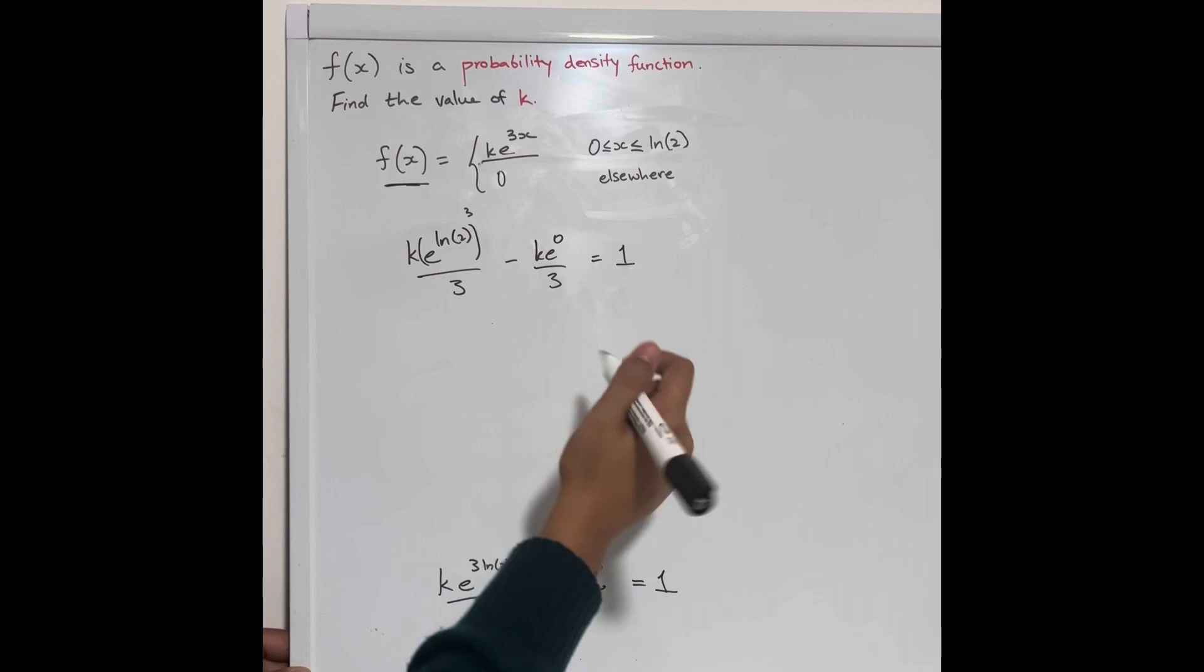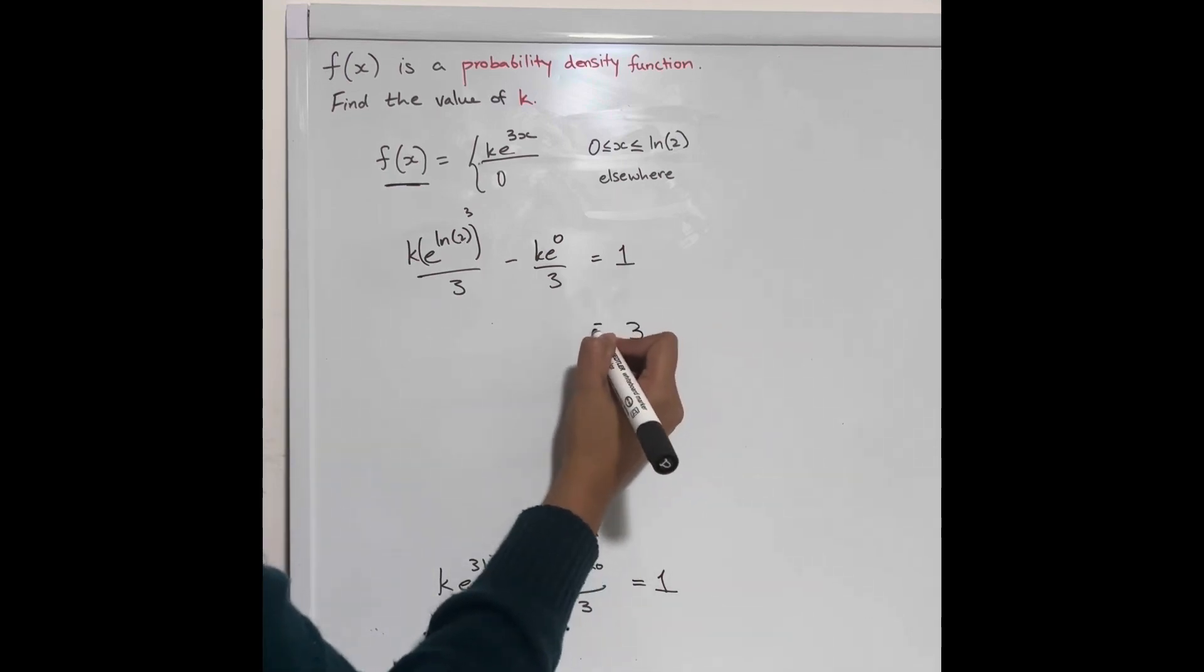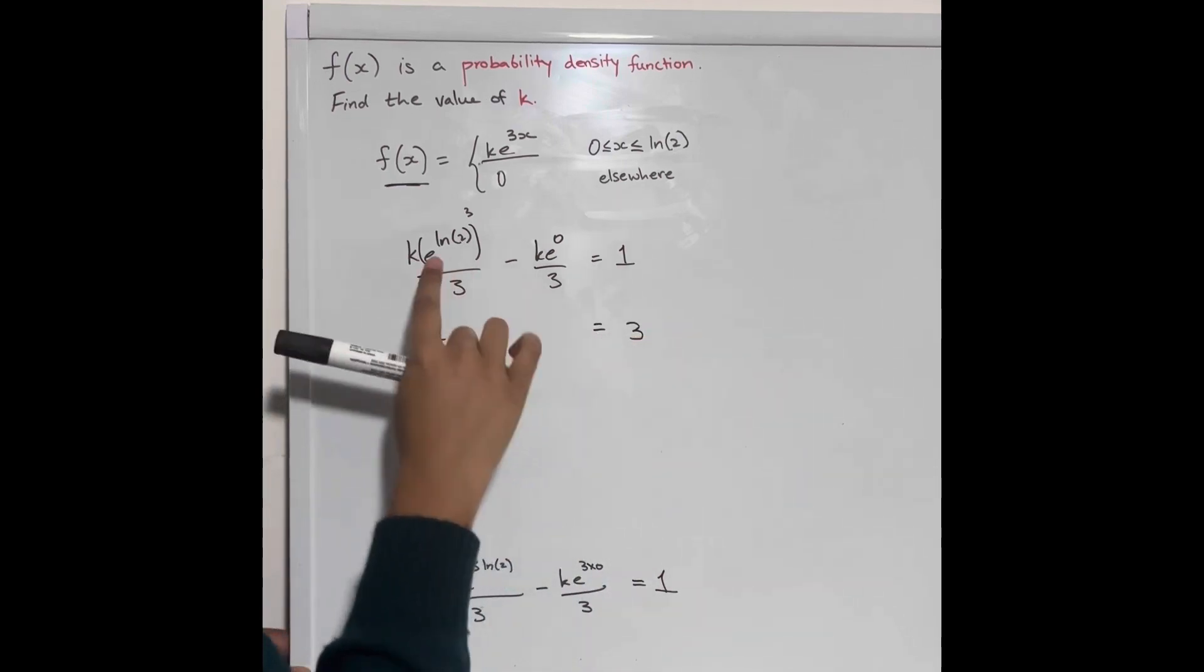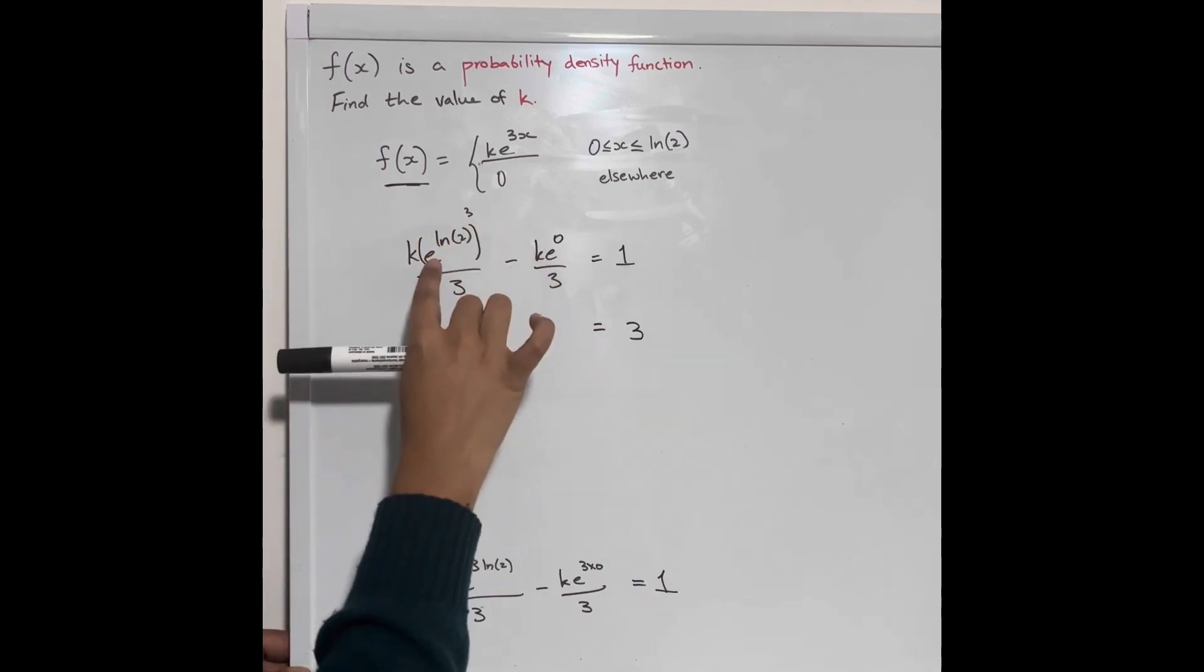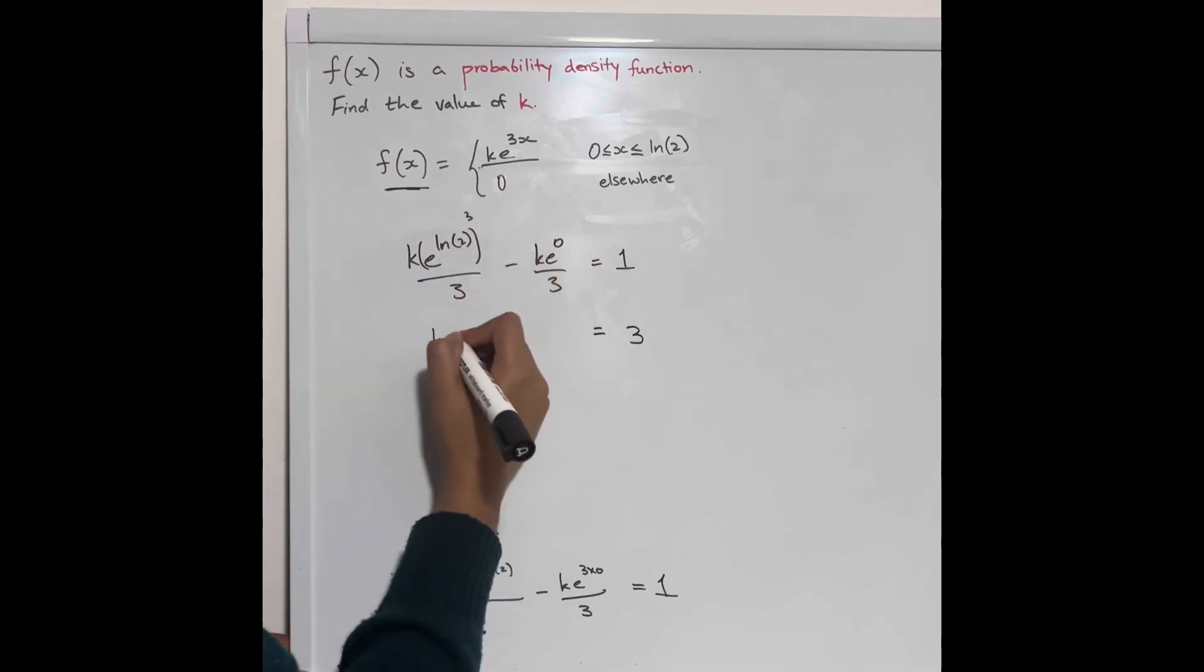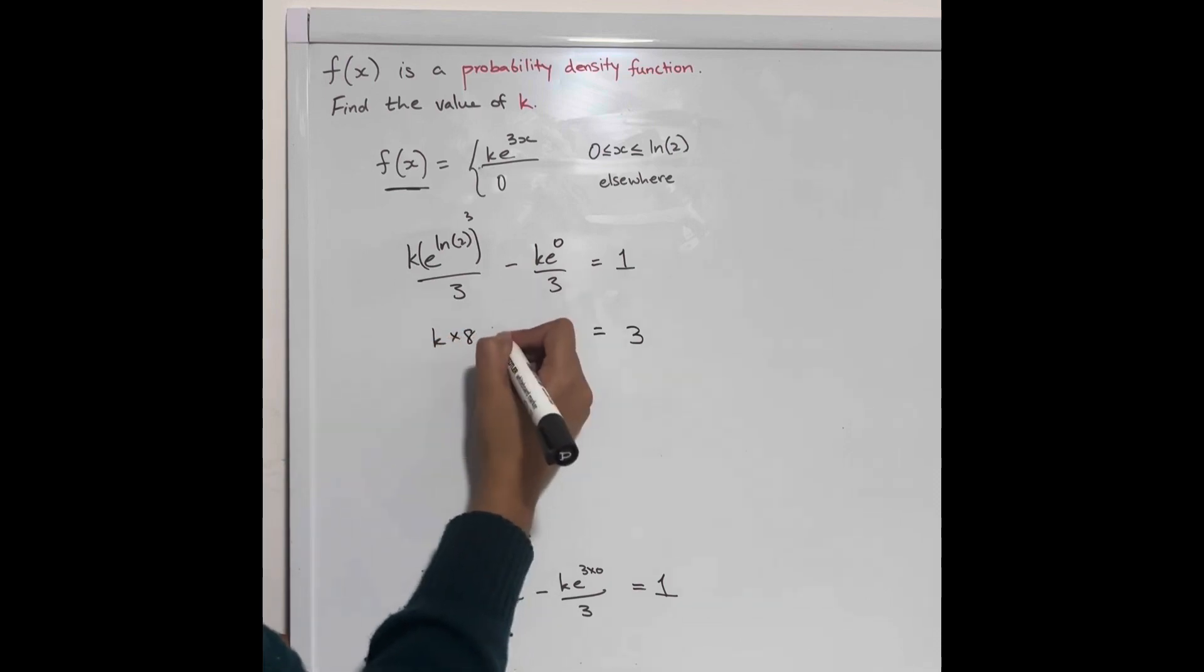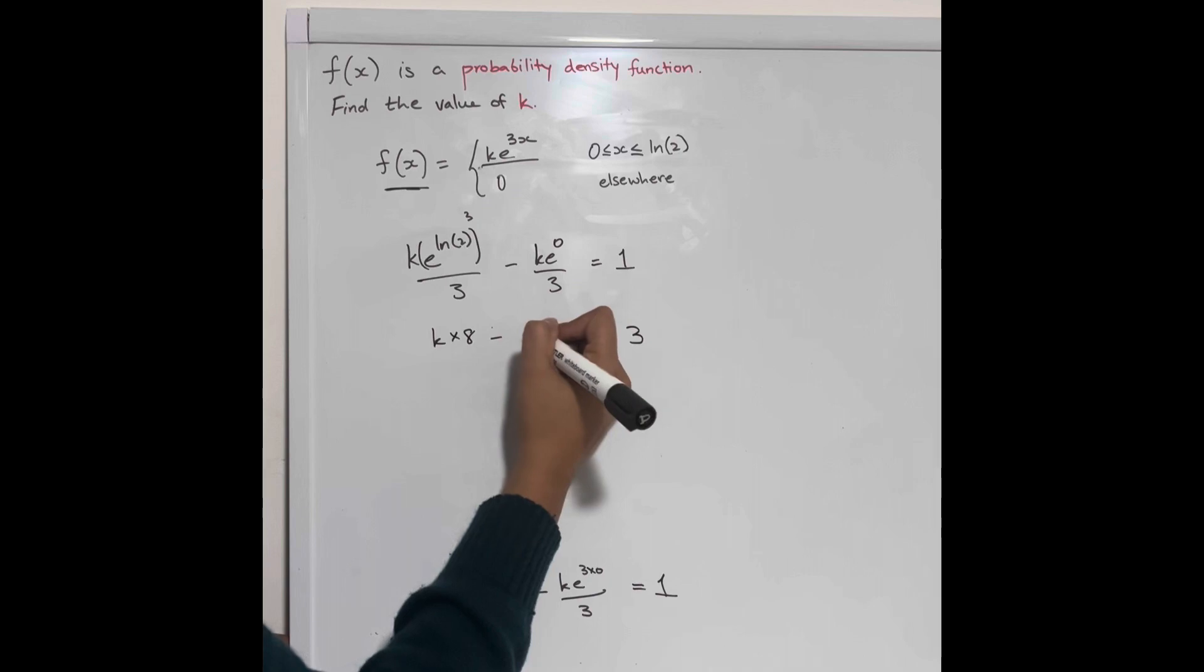If you multiply both sides by 3, we can get 3 equals k e ln 2, so e and the ln will cancel, and we're going to have 2 to the power of 3, which is just 8, minus k e to the power of 0 is just 1, so we're going to have minus k.